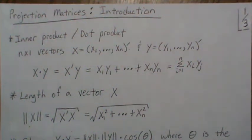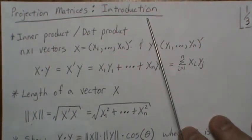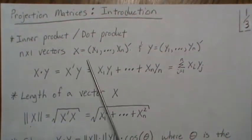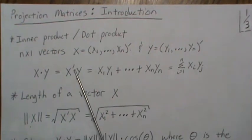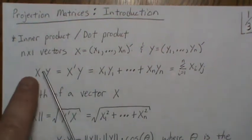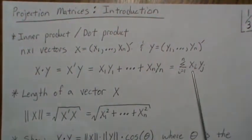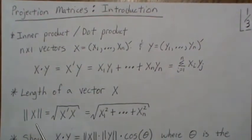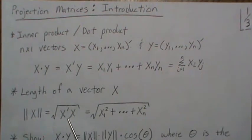In this video we look at projection matrices as an introductory topic. The inner product or dot product of n-by-1 vectors X and Y, written X·Y, is the same as the vector product of X and Y — you take the first components, multiply them, add to the multiplication of the second components, and so on. The length of a vector is denoted by double bars, which is the square root of the dot product of the vector with itself.